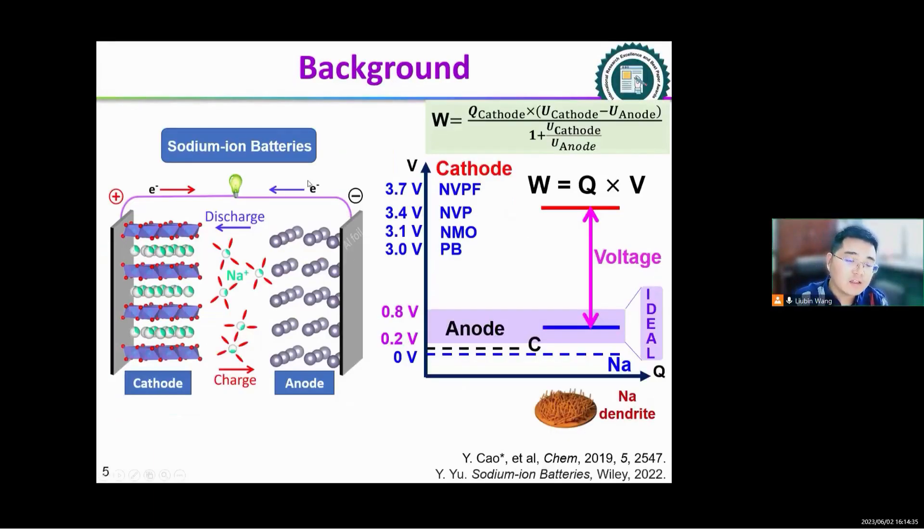The mechanism of sodium ion battery is similar with that of lithium ion battery. During the charging process, sodium ions move from cathode to the anode, while electrons travel through the external circuit. The discharge process is opposite.